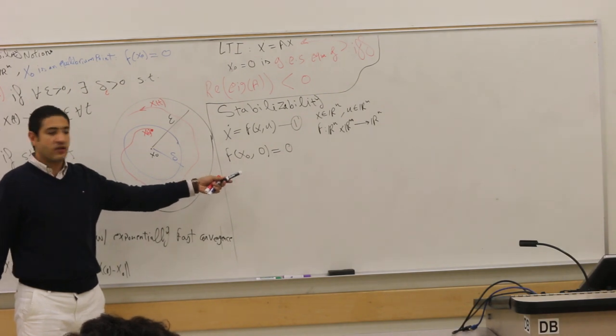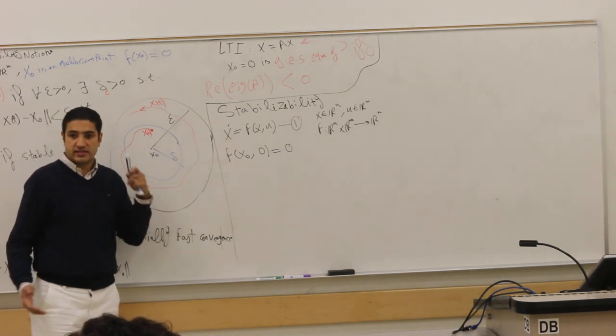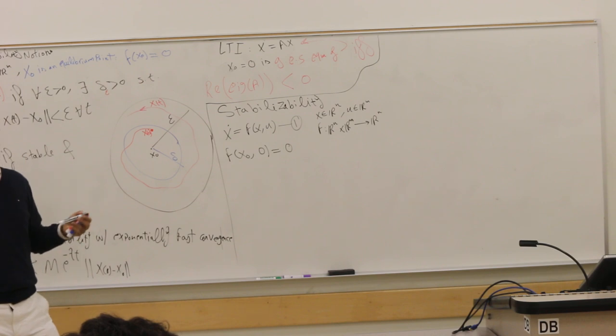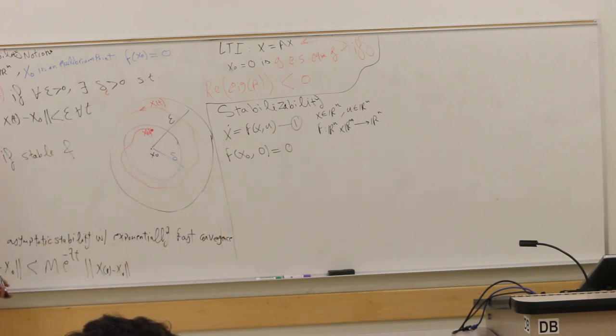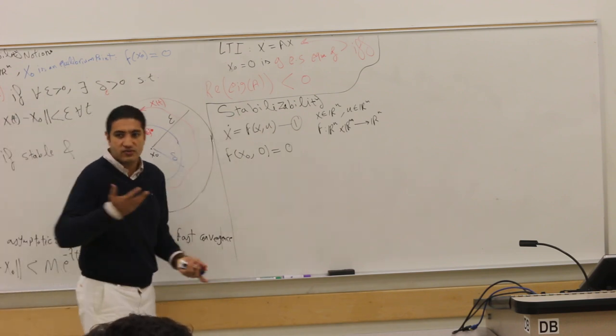The question is, this x_0 is an equilibrium point at zero control, but it might be unstable, and I want to use my control to stabilize it, and I want to know before just spending my entire life trying to do that when it cannot be achieved - you don't have enough actuators or something - I want to ask, can I do it first or not? Okay?